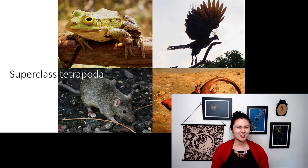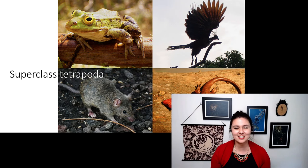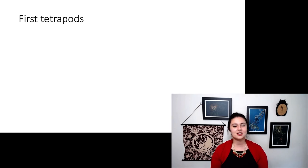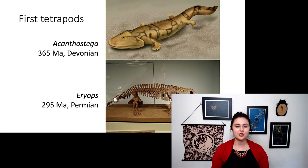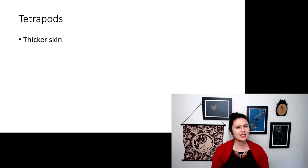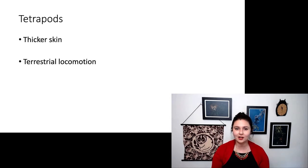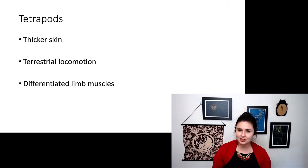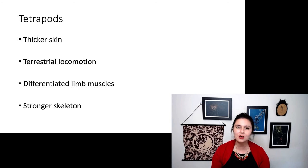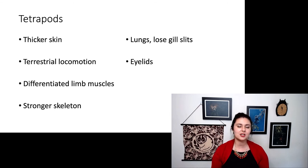So the next step that we see is superclass tetrapoda. Tetra means four, poda means feet. So now we have four-limbed creatures. Here this refers to anything with four limbs, which includes birds, even though they don't have four feet. They do have two wings and two feet, so it's still four limbs. So the very first tetrapods, we have Acanthostega here in the Devonian. We have Eryops a little bit later in the Permian. What we see here is these guys have thicker skin, and now we have fully terrestrial locomotion. So they are moving around on land rather than just in the water. We also see differentiated limb muscles, and their skeleton is a lot stronger because they no longer have the buoyancy of water to help hold them together. They have lungs instead of their gill slits. Now they have eyelids because they need to keep their eyes from drying out, and we see enhanced hearing.